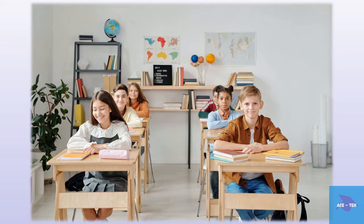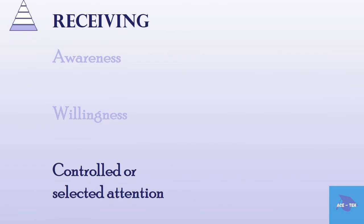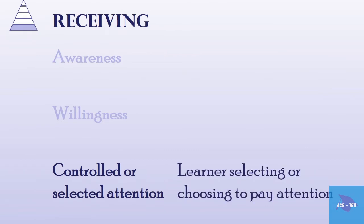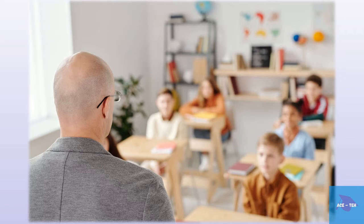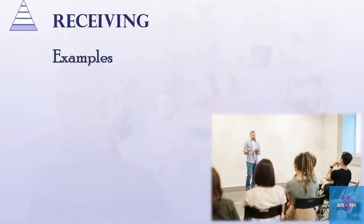The third sub-level is controlled or selected attention. This involves the learner selecting or choosing to pay attention to the situation. When a teacher teaches in class, the learner is aware of what the teacher is saying and will deliberately shut off any other distractions. The sub-domain of receiving in a classroom involves holding and directing the attention of learners to whatever the teacher has to say.